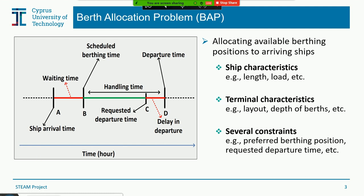The presented figure shows the timeline of the berth allocation problem. If a ship arrives at point A and starts working at point B, the difference between A and B is the waiting time. If it starts working at point B and the requested departure time is at point C, but it completes its task at point D, the difference between C and D is the delay in departure time. The primary objective is to reduce waiting time, delay in departure time, and overall cost.